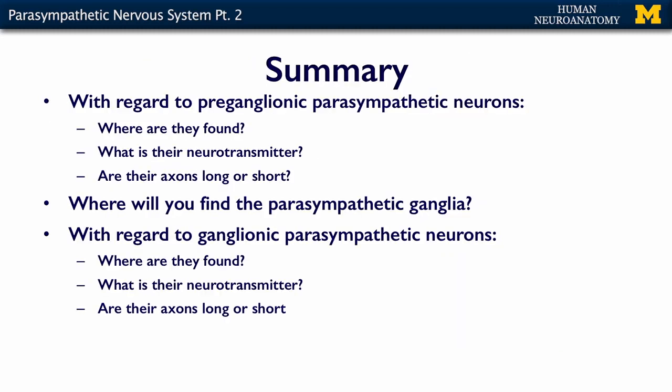With regard to preganglionic parasympathetic neurons: where are they, what neurotransmitter do they use, and are their axons long or short? Where will you find the parasympathetic ganglia? Think about the difference between the cranial nerves and the sacral area and what those preganglionic neurons project to. With regard to ganglionic neurons: where are they found, what's their neurotransmitter, and are their axons long or short? Once you have these concepts under your cap, you're ready for the assessment.